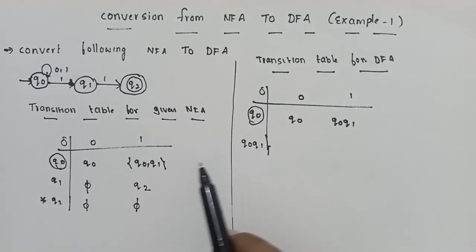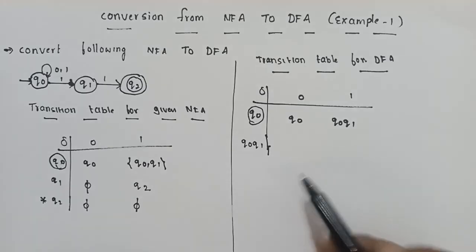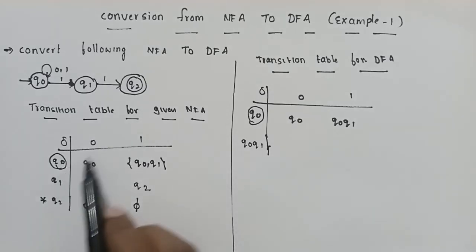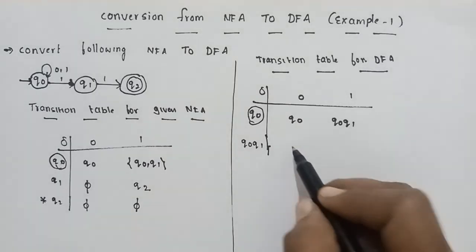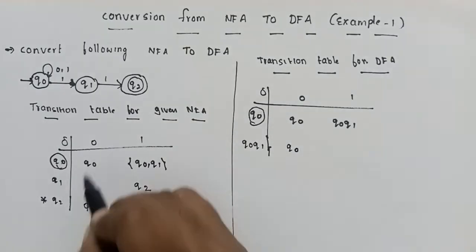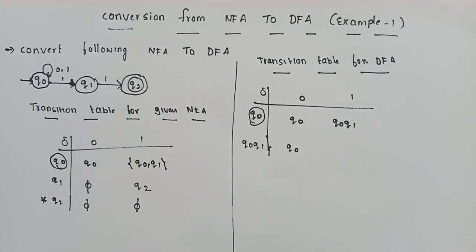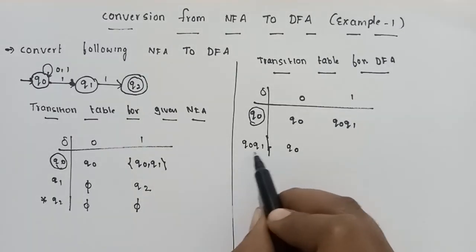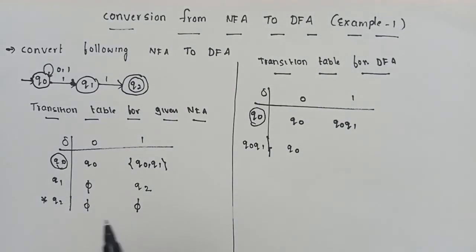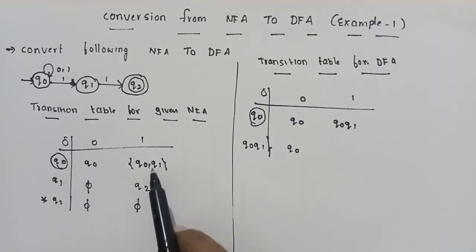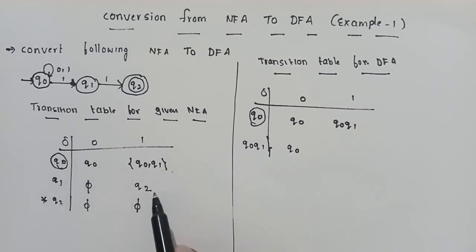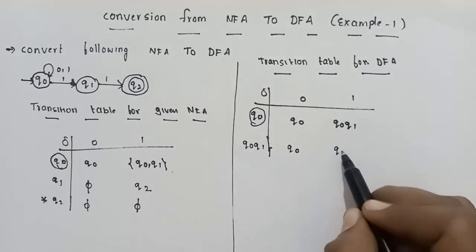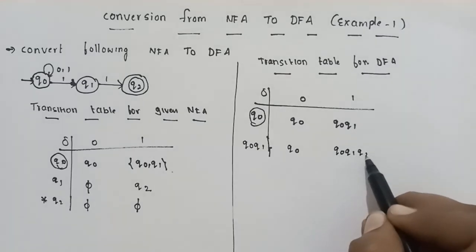Now we expand the state {Q0, Q1}. For input 0: Q0 on 0 is Q0, and Q1 on 0 is empty, so {Q0, Q1} on 0 gives Q0 union empty = Q0. For input 1: Q0 on 1 is {Q0, Q1} and Q1 on 1 is Q2, so {Q0, Q1} on 1 gives {Q0, Q1, Q2} via union.